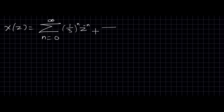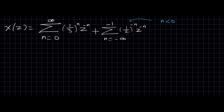Plus the sum with limit minus infinity to minus 1, where x(n) in this case is 1 over 2 raised to minus n, times z raised to minus n. The limit for this sequence is n less than 0, so it is not equal to 0. Therefore we have taken minus infinity to minus 1.